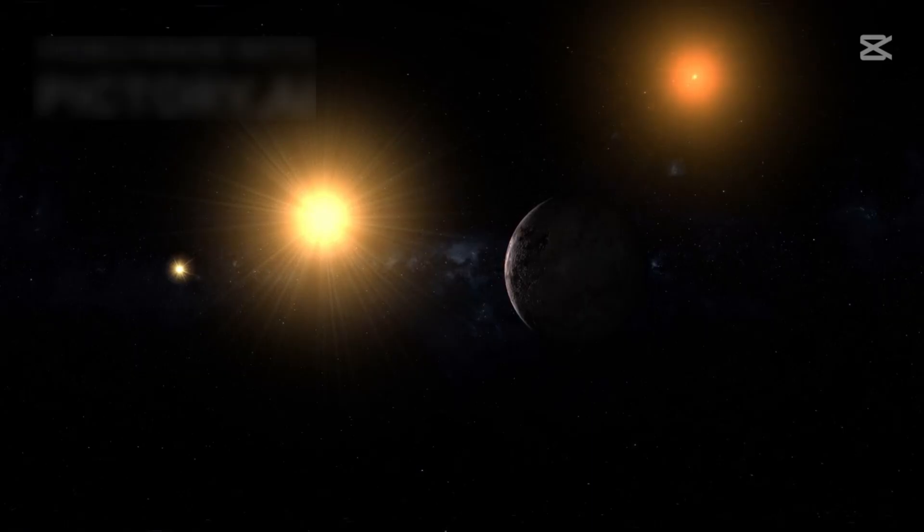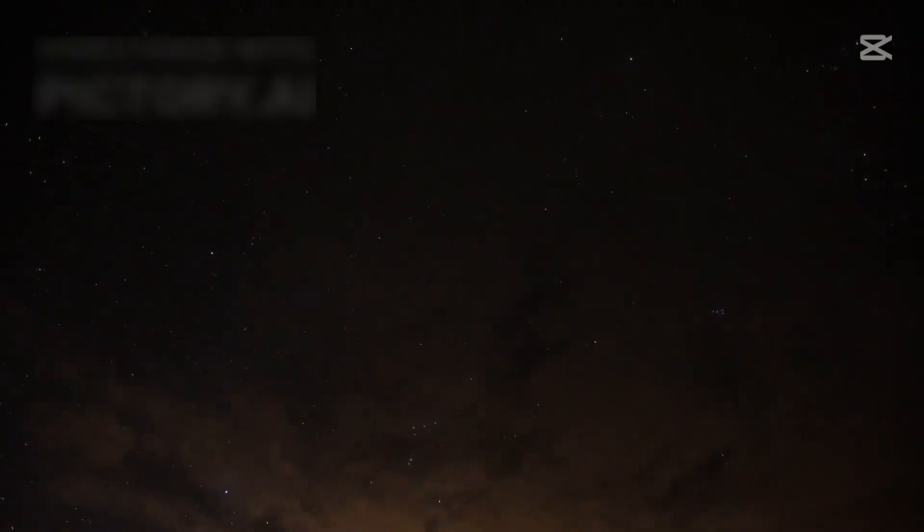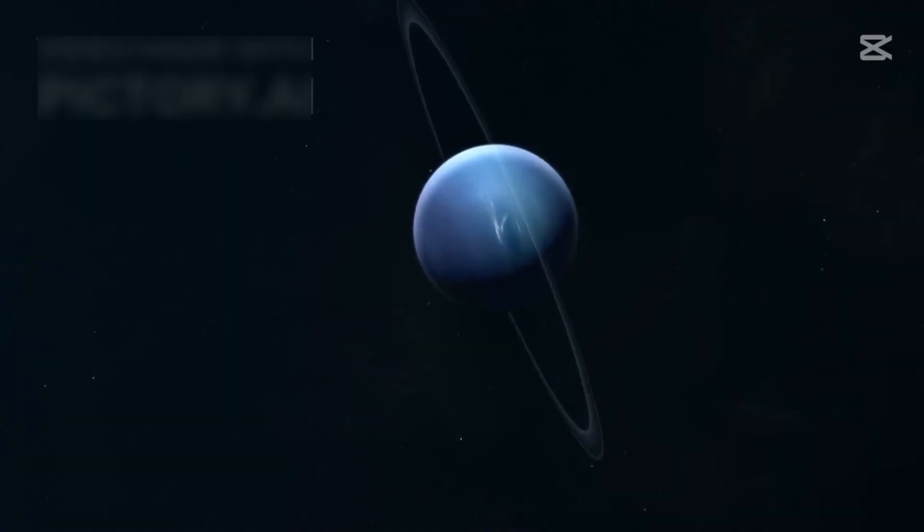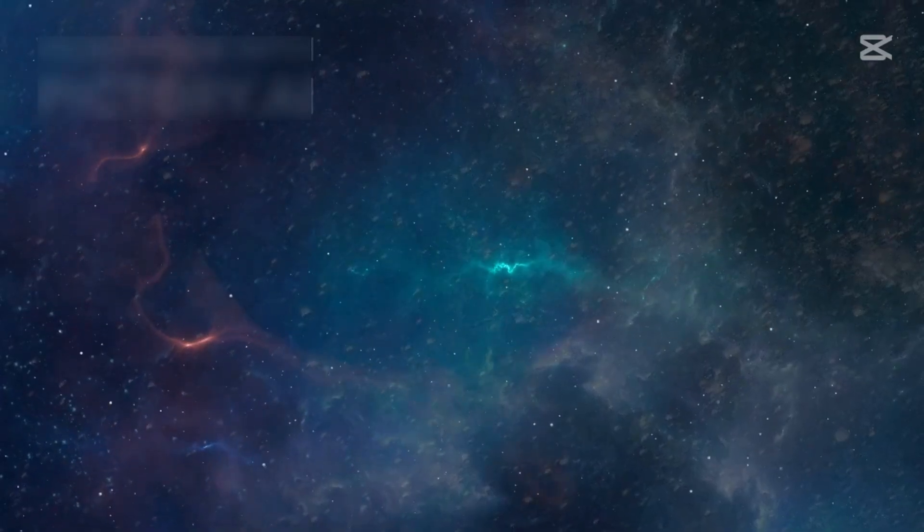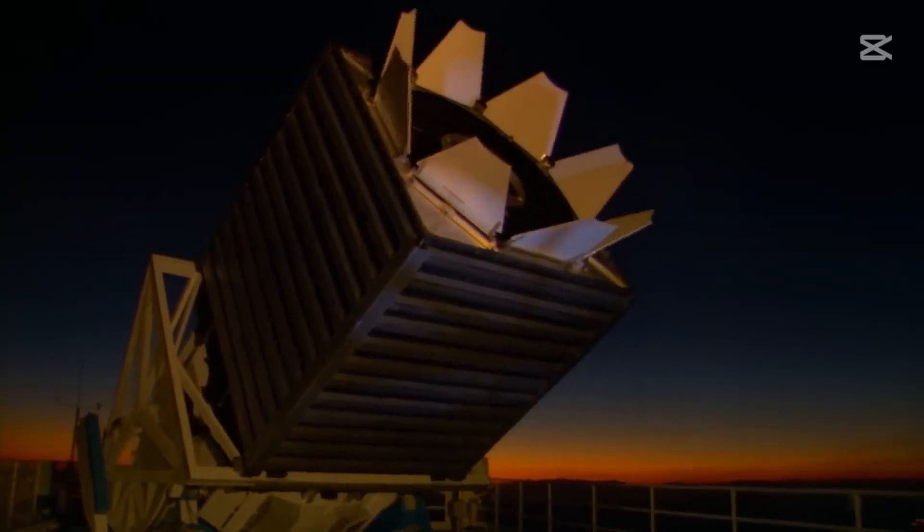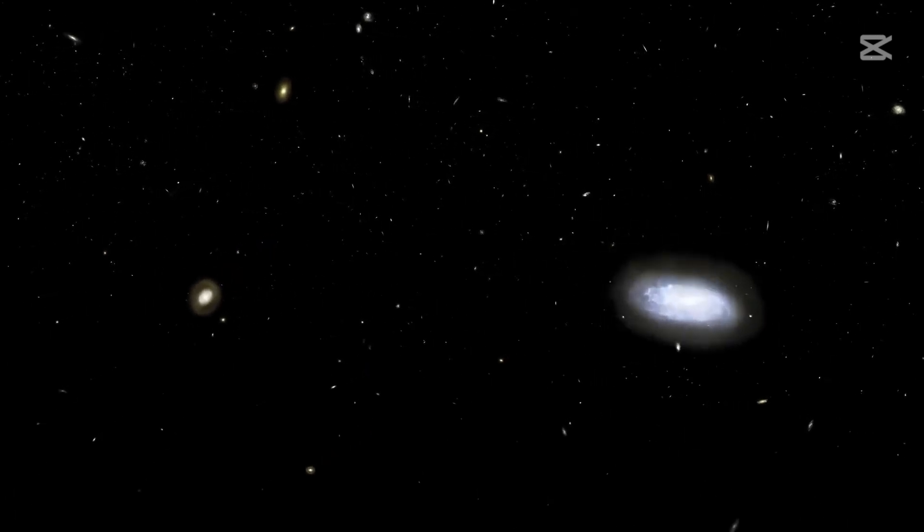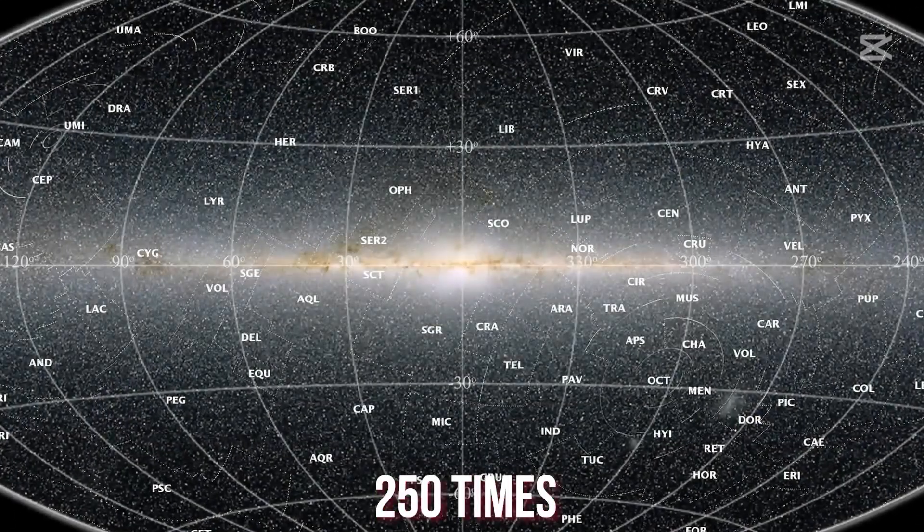As we look further from our own galaxy, we encounter our local group of galaxies, followed by the Virgo cluster, which contains more than 1,500 galaxies. Virgo is part of an even larger structure called the Laniakea supercluster, which consists of about 100,000 galaxies. Each of these galaxies contains hundreds of billions of stars and planets, and this is just a tiny fraction of the grand scheme.